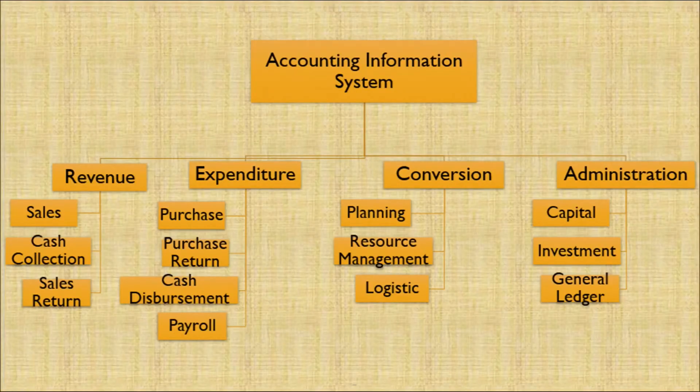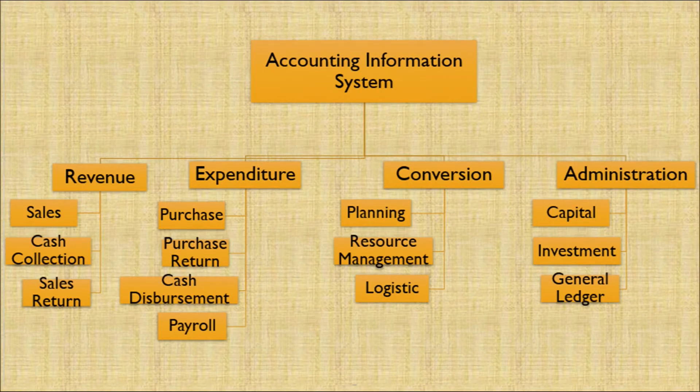Let's discuss accounting information systems. It includes revenue, expenditure, conversions, and administration. Revenue covers sales, cash collections, and sales returns. Expenditure covers purchase, purchase returns, cash disbursement, and payroll. Conversion covers planning, resource management, and logistics. Administration includes capital, investment, and general ledger. Therefore, the accounting information system helps an organization manage its entire accounting process — through revenue, expenditure, and administration of the overall accounting, and planning of the accounting entries.